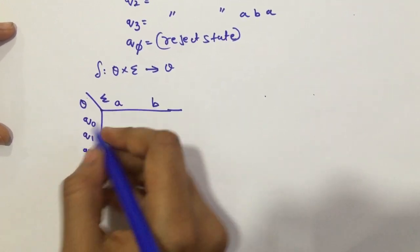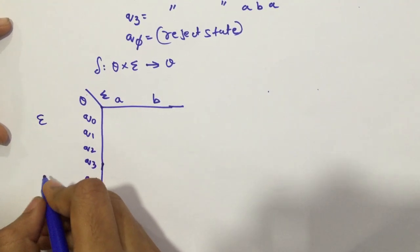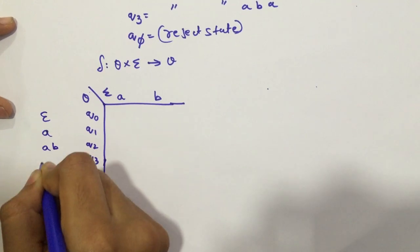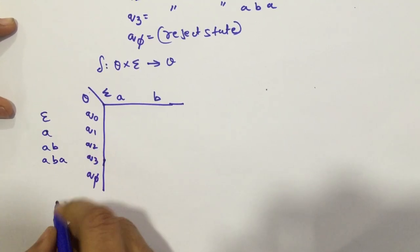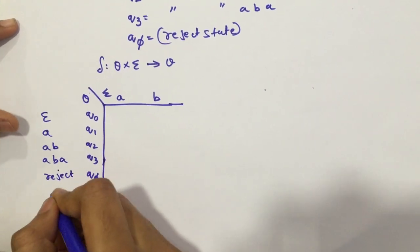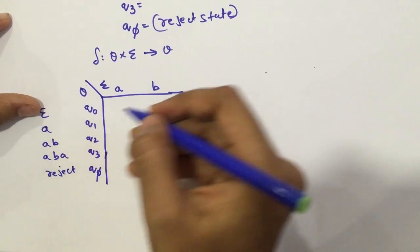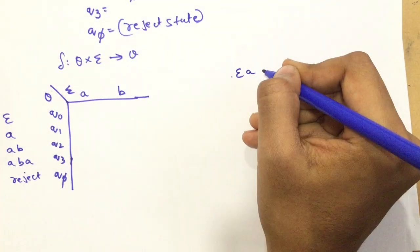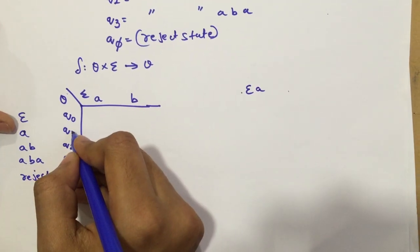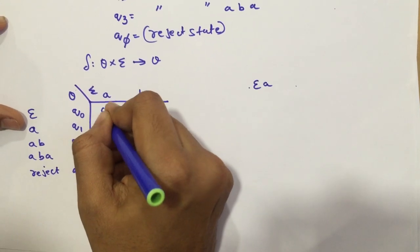Just for convenience, let's mention what these are. This was my initial state, or I can call it epsilon. And this was my string starting with A, string starting with AB, string starting with ABA and it was my reject state. So, if I put A with epsilon, I get epsilon A. So, that is effectively equal to A. Since Q1 says that Q1 is the state which starts with A, we're going to put Q1 here.